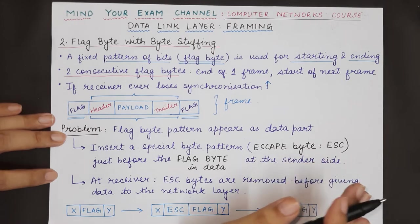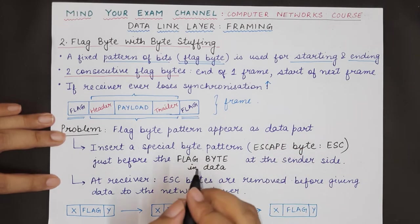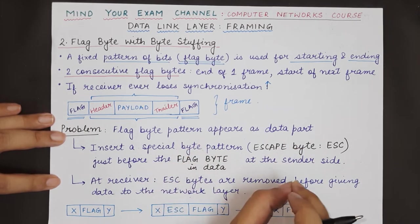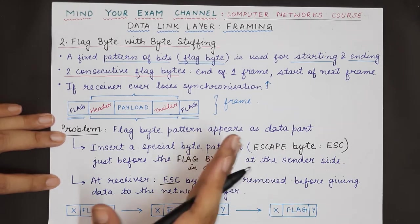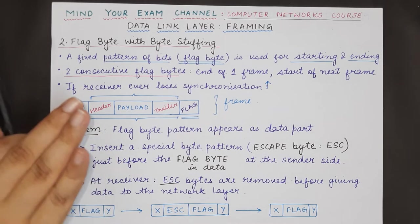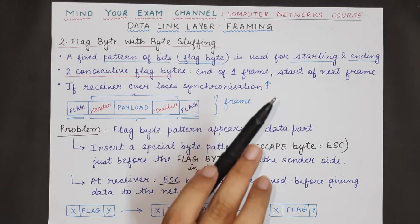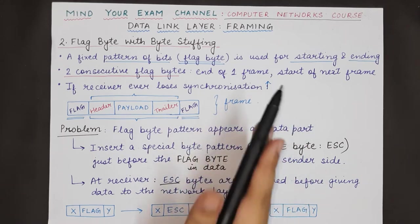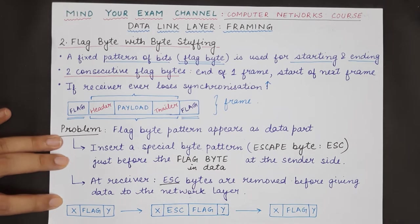Whenever this kind of frame is sent to the receiver, the receiver checks for any escape bytes in the stream and removes all of them before passing the data to the network layer. At no point should the data link layer at the receiver send escape bytes or redundant information to the network layer — the network layer should only receive the information that was actually sent by the sender.